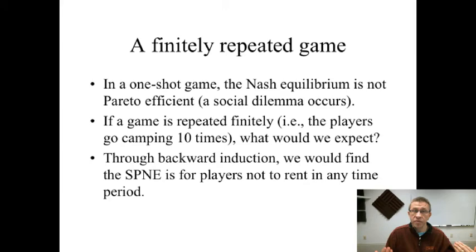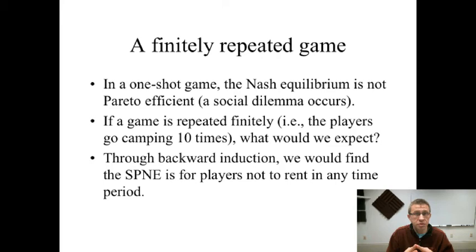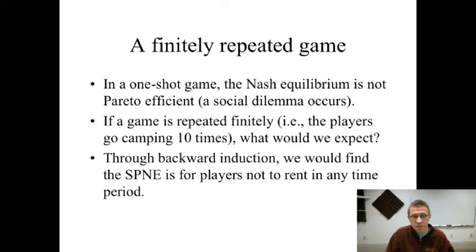Then they would look back — maybe the eighth is when I should rent. However, if we know that neither side is going to rent in the ninth or the 10th period, why would either want to rent in the eighth? And in fact, you see that all the way back. Through backward induction, you could draw out a tree diagram — it's not a bad exercise to try on your own. Every single time you're going to find 'not rent, not rent' is the Nash equilibrium, and that happens every single time.